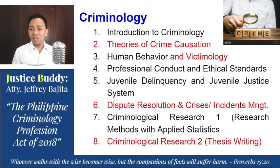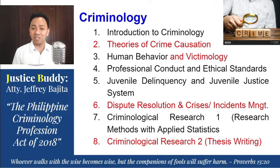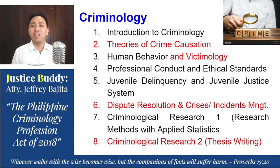Number 7 is Criminological Research 1. This is also present under the old curriculum, which was Research Methods and Applied Statistics. Number 8 is Criminological Research 2, or thesis writing, because under the old curriculum there was only a three-unit course provided for research. However, under the new curriculum we now have two research courses: Criminological Research 1 and Criminological Research 2, which is thesis writing.